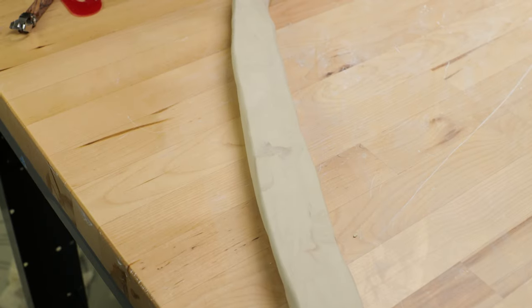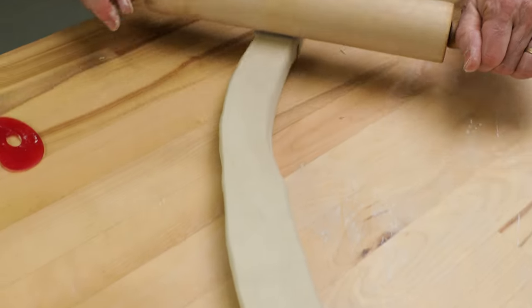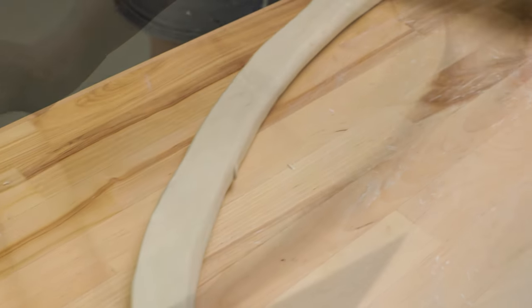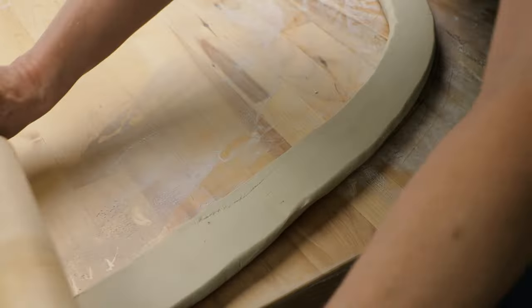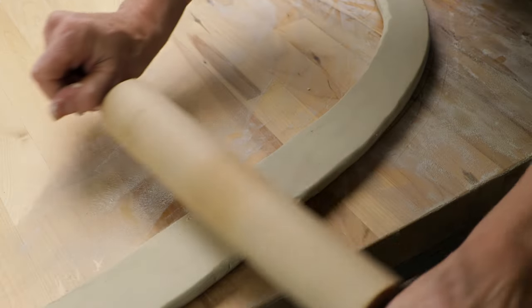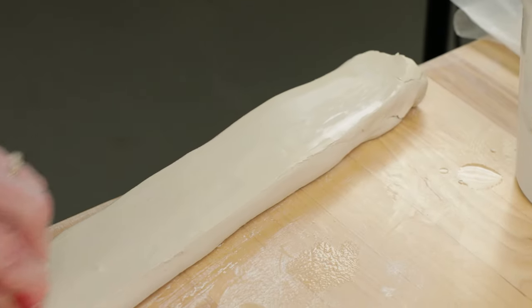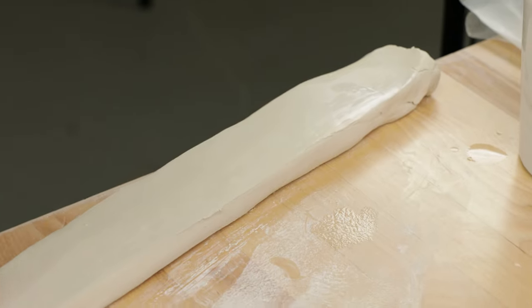For the next step, I needed to flatten out just the top of the coil. I used a rolling pin to gently roll over the top. I then compressed it using a rubber kidney rib and a little water.